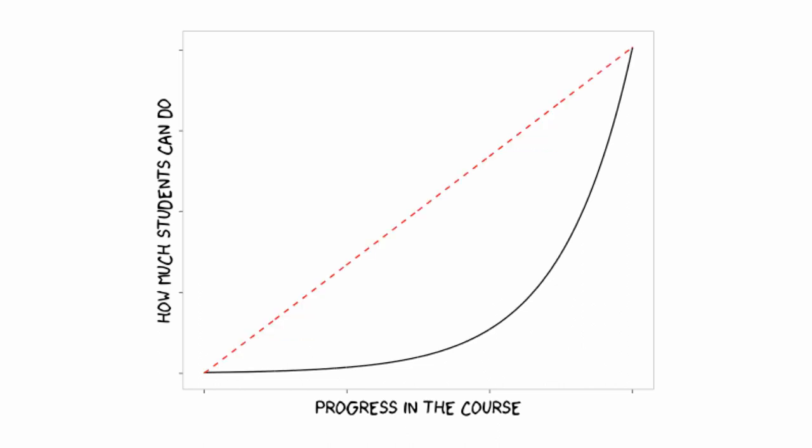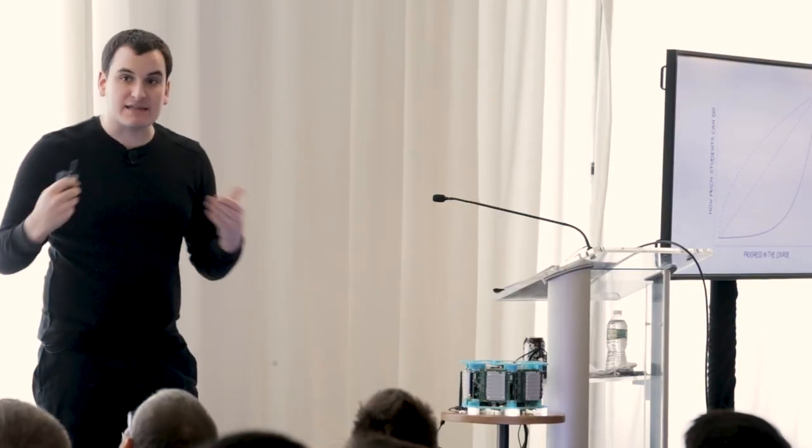A better path might be that the further progress you make in the course, the more students can do in a linear trend, so people are always gaining more and more power. In fact, you can probably, if you're a little bit clever, structure your course so it's a bit front-loaded, where you can kind of follow the 80-20 rule. Solve 80% of students' problems as early as you can, and then start getting into the details of other things they might need to do later in the course.